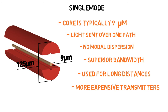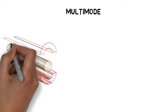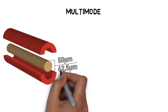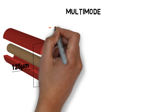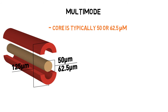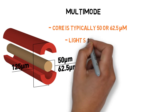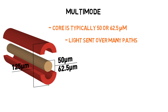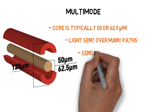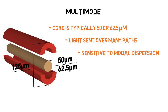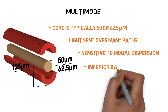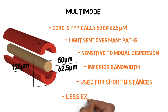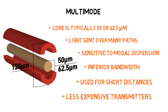Multi-mode fibers either have 50 or 62.5 micron diameter cores. These larger cores have room for multiple optical signals to be transmitted simultaneously across the fiber. This makes multi-modes sensitive to modal dispersion. They do not have as high a bandwidth capacity as single mode fibers, but their transmitters are generally less expensive.